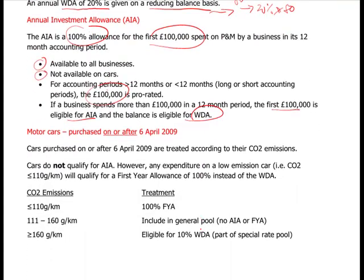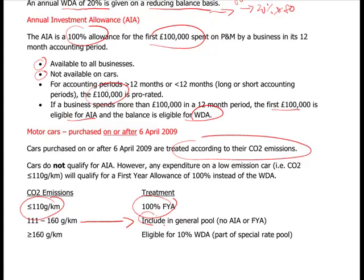Motor cars: there has been a rule change. Up to 5th April 2009 one rule applied; on or after that date, cars are treated according to their CO2 emissions. If CO2 is less than 110g/km you get a 100% first-year allowance - more generous than before. If CO2 is in the mid-range band, the car goes in the general pool and gets normal writing down allowances. If CO2 is greater than 160g/km, you only get 10%, so the more inefficient the car, the slower the relief.